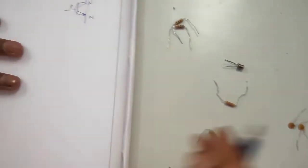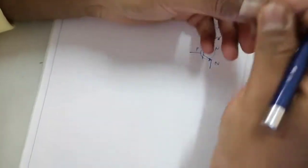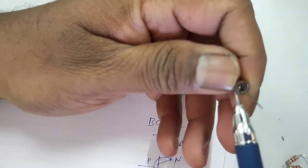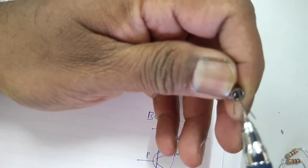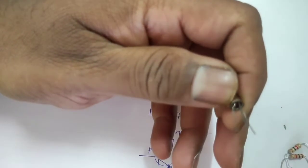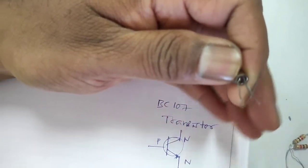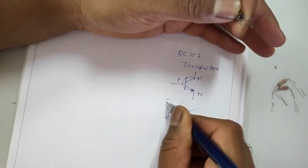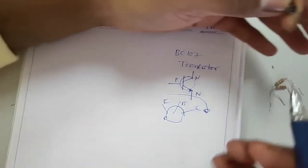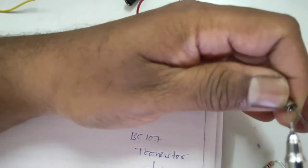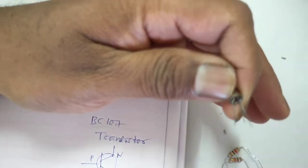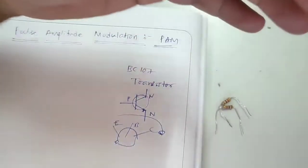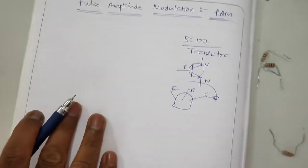Before writing the circuit diagram, I will show you how to identify the leads of the transistor. There is a notch on the transistor. From the notch, going clockwise with leads facing towards you, the order is Emitter, Base, and Collector - EBC. You have to hold the transistor like this. It is an NPN Transistor BC107.